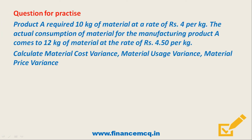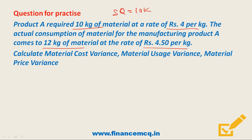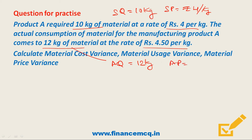In this example, Product A requires 10 kg of material at ₹4 per kg (standard). The actual consumption for manufacturing Product A is 12 kg at ₹4.50 per kg. So: Standard Quantity = 10 kg, Standard Price = ₹4 per kg, Actual Quantity = 12 kg, Actual Price = ₹4.50 per kg.